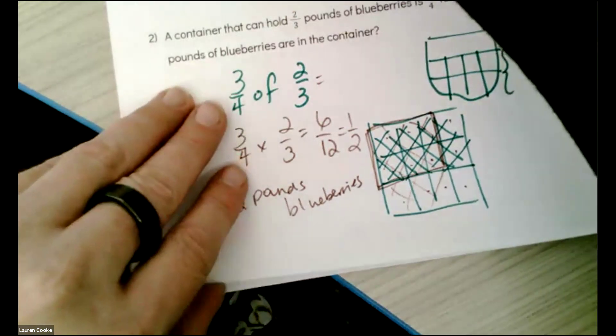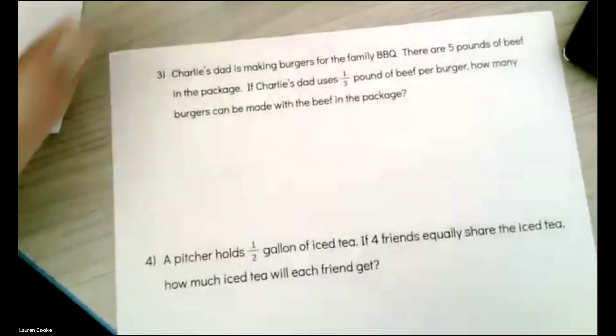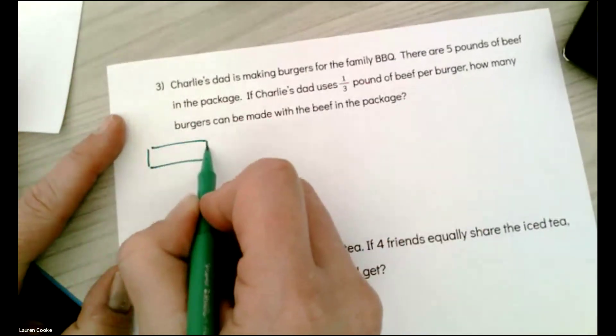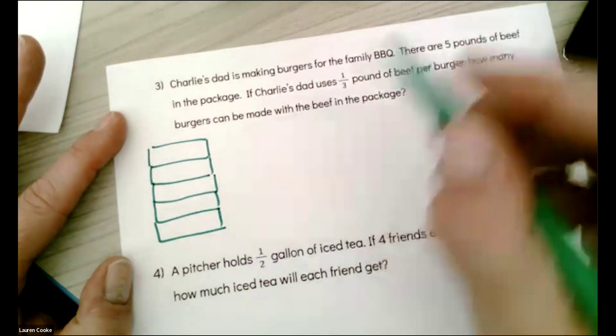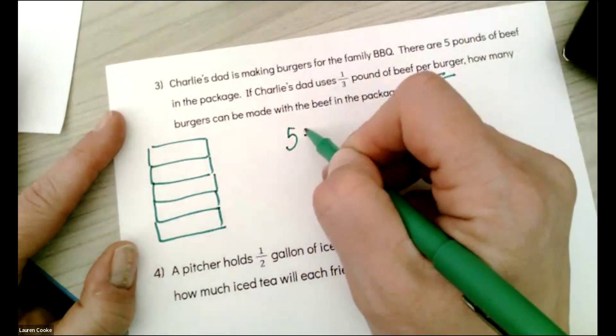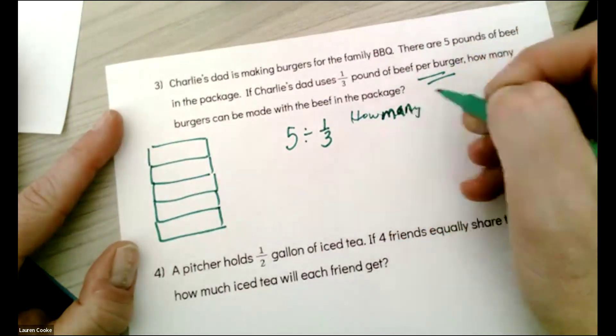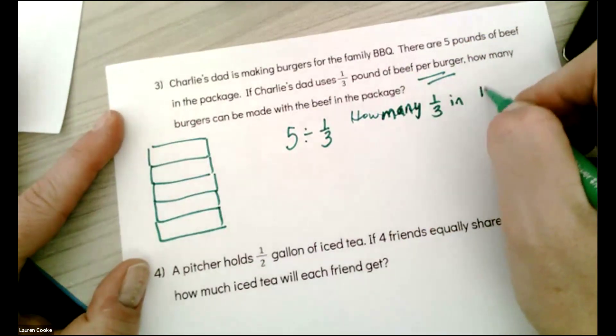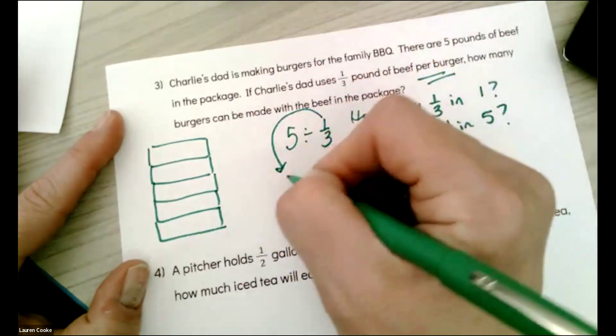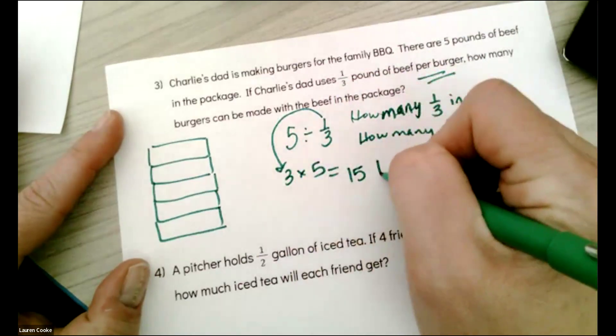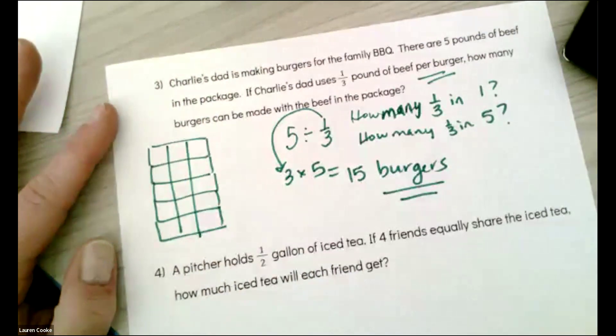Next page. Charlie's dad is making burgers for the whole family's barbecue. Five pounds of beef in the package. So immediately I'm thinking five pounds: one, two, three, four, five. Let's see what I'm going to be using. One third pound of beef per burger. I'm thinking division, five divided by one third. I'm asking myself how many one thirds in one? And then how many one thirds in five? Three times five. I'm going to get 15 burgers. Words. Word problem has a word answer. 15 burgers.